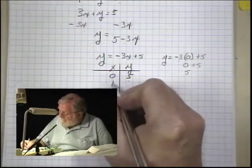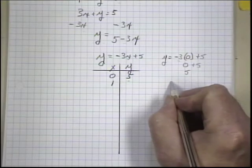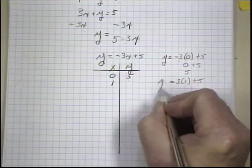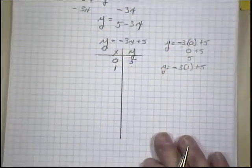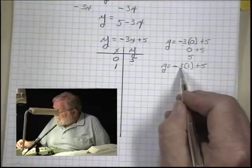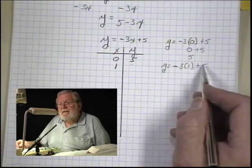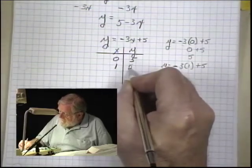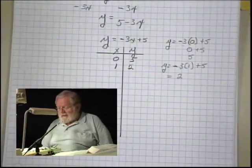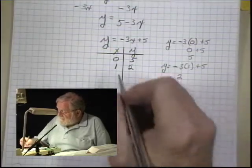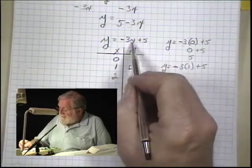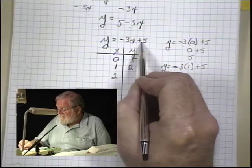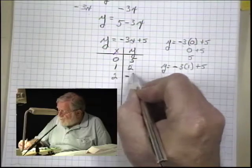Let's try it with 1. We'd have -3 times 1 plus 5. -3 times 1 is -3. -3 plus 5 is +2. So our ordered pair would be (1, 2). And we'll try it now with 2. So we'd have -3 times 2 is -6, plus 5. -6 plus 5 is -1.